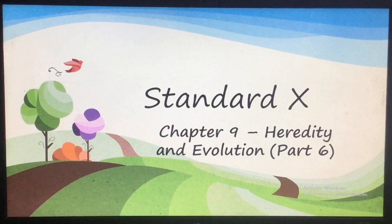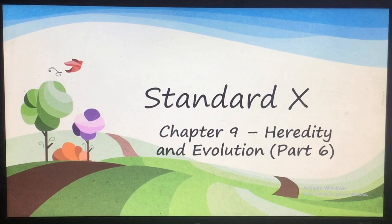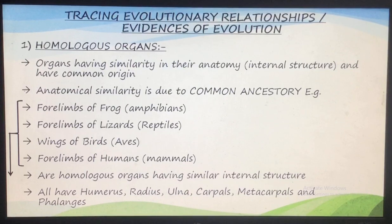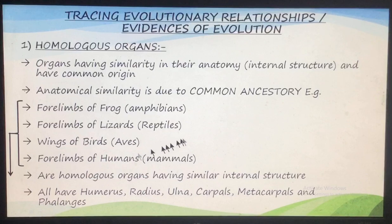Hello students, we will continue with the same chapter - heredity and evolution. Last time I explained how speciation takes place, that is how new species are formed, which is the base of evolution. Today we will be talking about evolutionary relationships - the evidences which tell us that evolution has taken place. Because human life is too short to see evolution happening, as evolution is a very slow process.